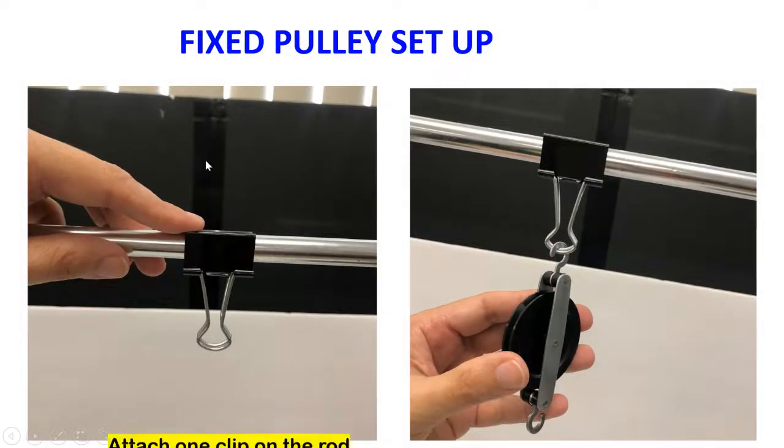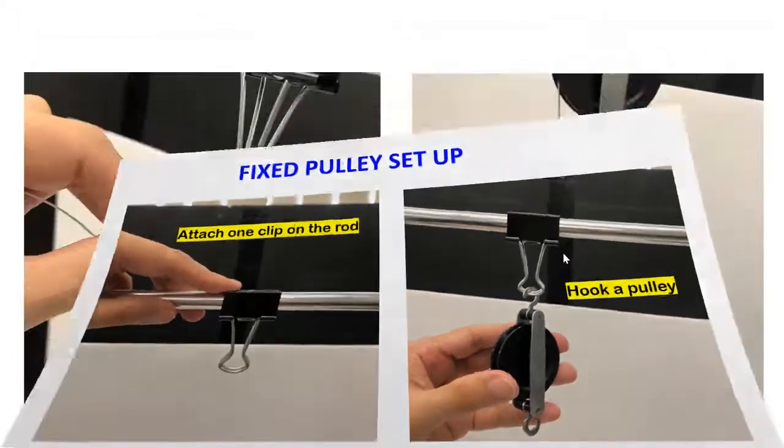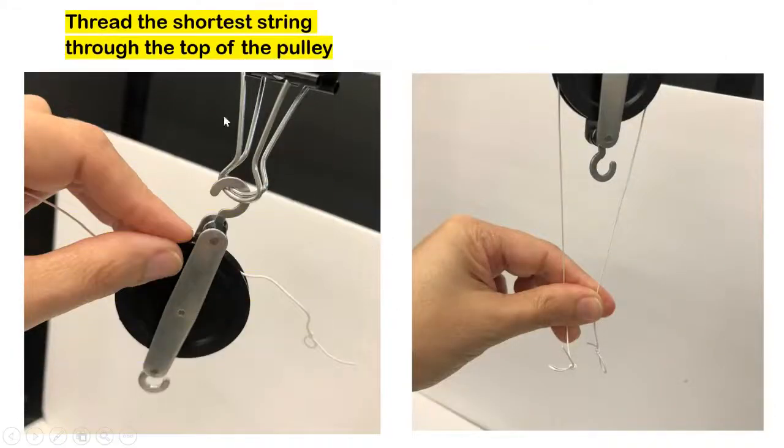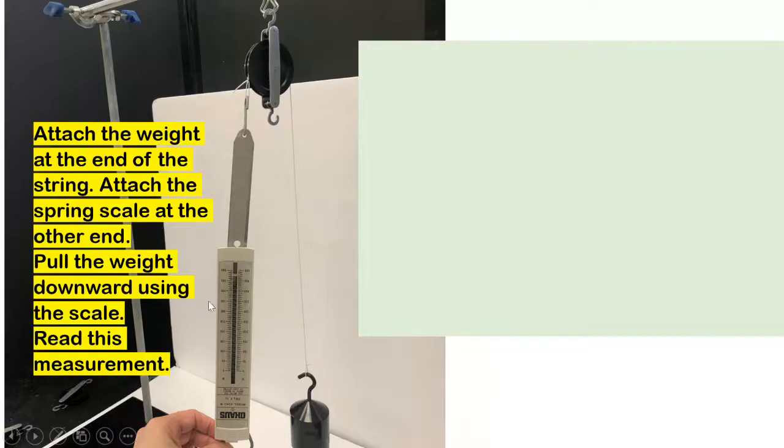Fixed pulley setup: attach one clip on the rod and hook a pulley. Thread the shortest string through the top of the pulley and hold both ends together. Attach the weight at the end of the string and attach the spring scale at the other end. Pull the weight downward using the scale and read this measurement.